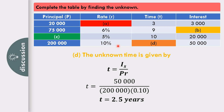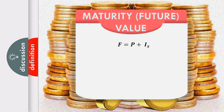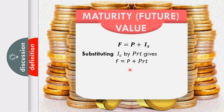Next is the maturity or future value, which is the total of principal plus interest. The formula is F equals P plus I sub S, where F is the maturity or future value, P is the principal, and I sub S is the simple interest. Substituting I sub S with PRT and factoring out P gives F equals P times the quantity 1 plus RT.